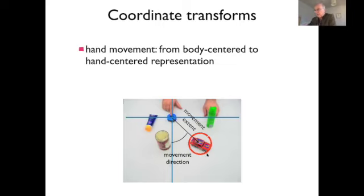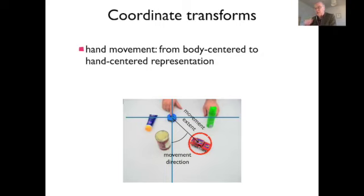If you have that hand-centered representation, you can read off the extent as the distance from the origin, and the direction as the angular representation of the object's location. There is actually some recent neural data suggesting that neurons in parietal cortex have exactly this property — representing objects in terms of the initial position of the hand — using the gain field property.